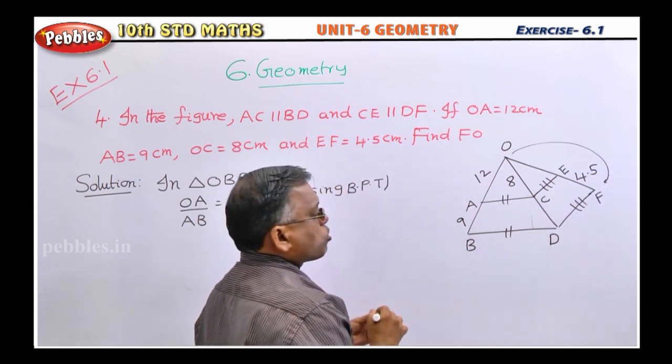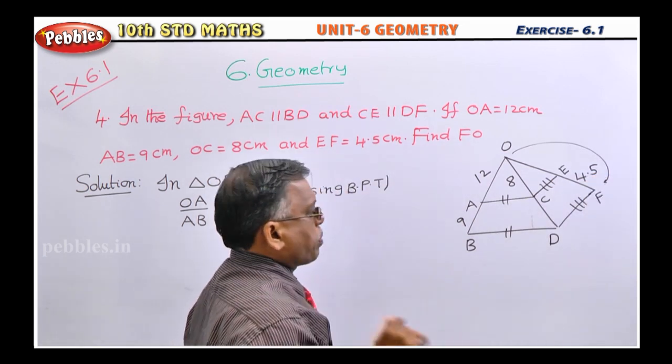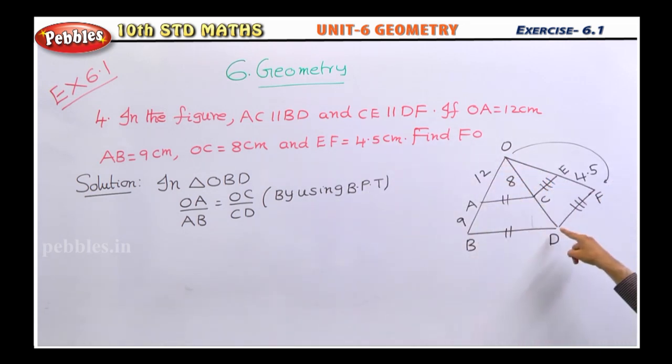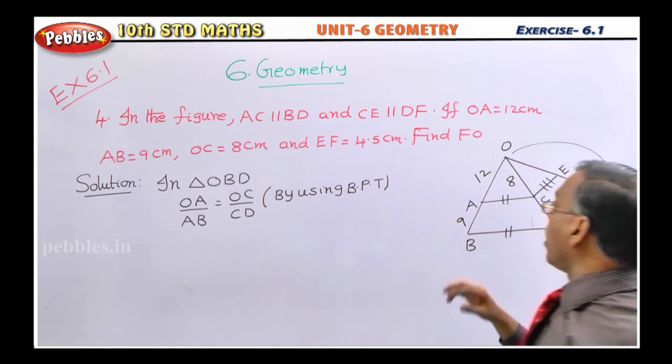So, for that, what you should do is, you apply the basic proportional theorem in two triangles. First, you apply in OBD, then you will get CD. Then you apply in ODF, you will get OE. So, once you get OE, OE plus EF is nothing but OF.